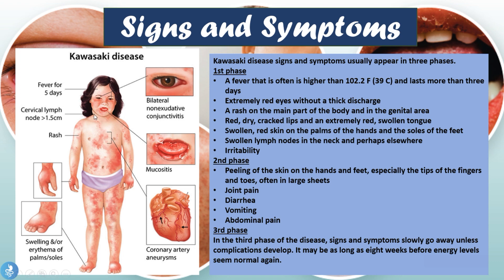The inflamed lymph nodes are usually located in the cervical or neck region and are around 1.5 centimeters or more in size. The eyes are red but don't usually have a thick discharge. The swollen red tongue is also called mucositis, and the rash on the body has a reddish aspect and may develop in the genital areas as well. The lips are often dry, extremely red, and cracked, and the children will also have swelling of their hands and feet.